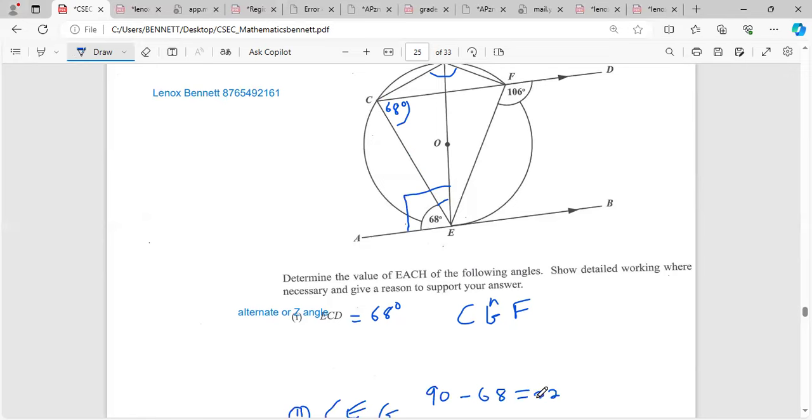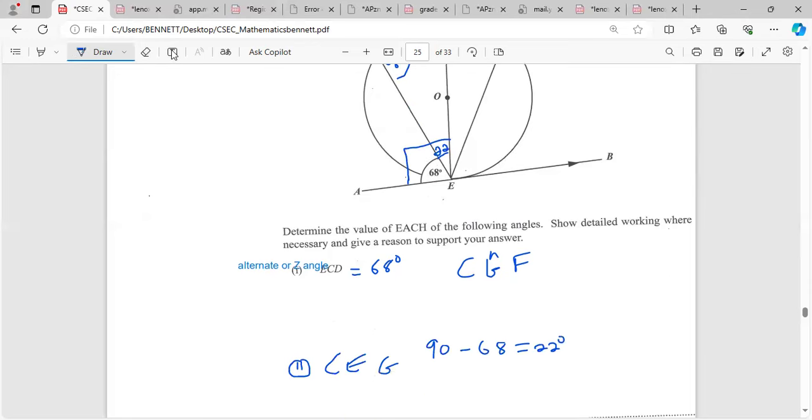So it's 90 minus 68. This angle should be 22, and the reason: angle between radius and tangent measures 90 degrees.